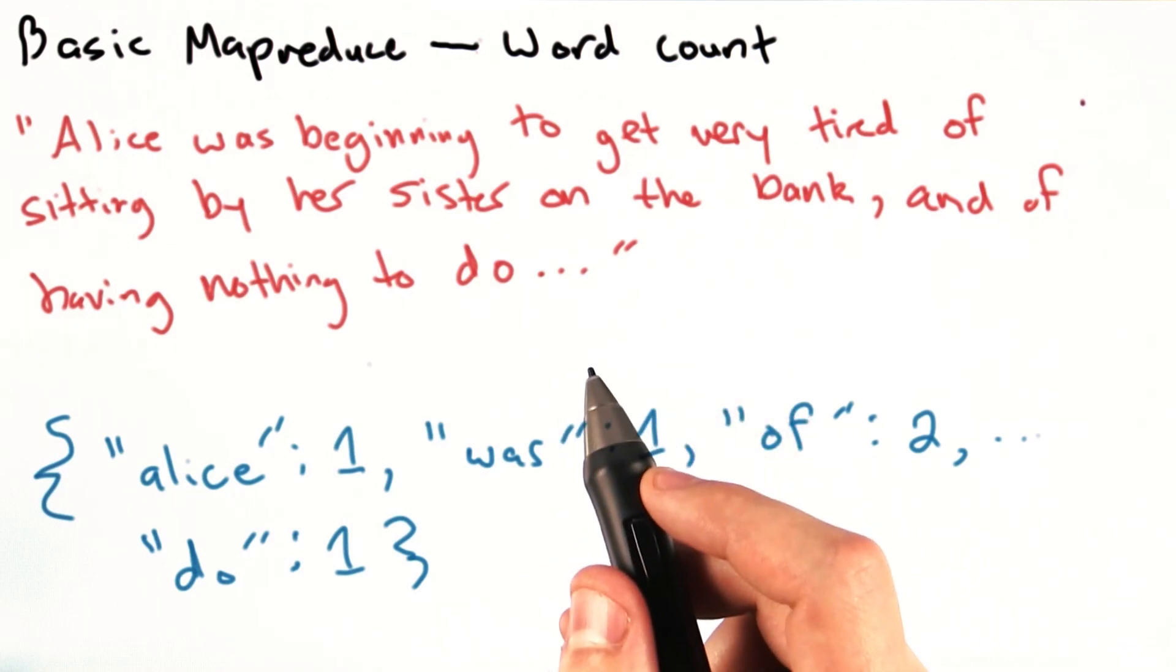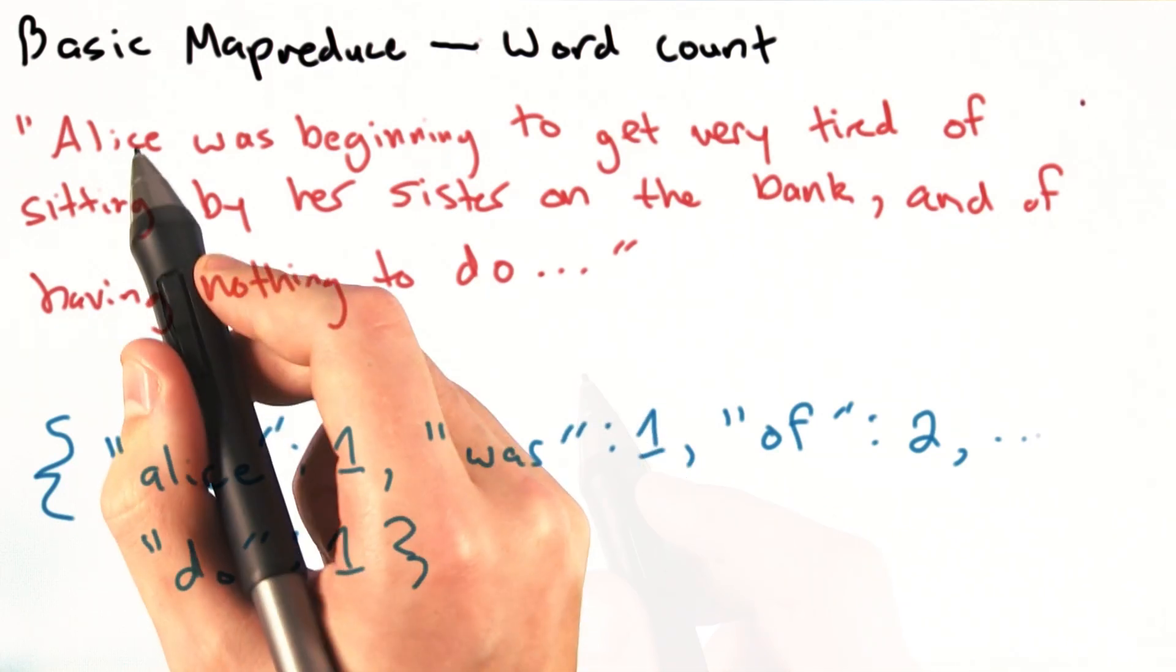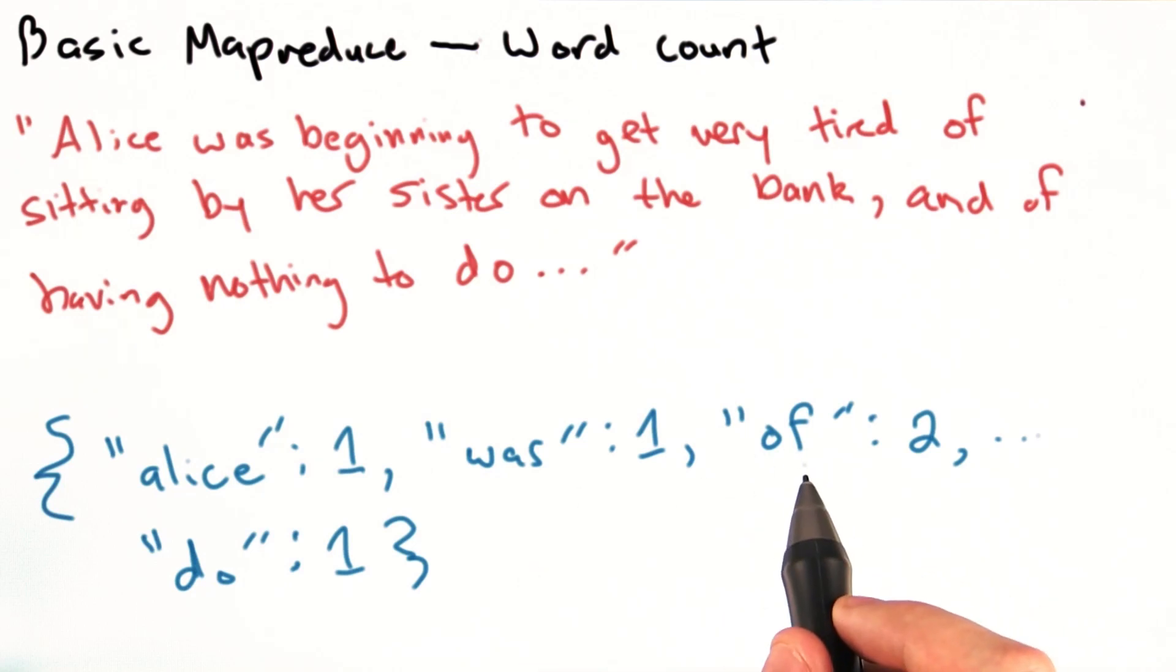why don't you try to write a Python script along the lines of what we just discussed that will get the job done. Given many lines of a text, create a dictionary with a key for each word and a value corresponding to the count of the word in that text. Note that we want the words to be stripped of any capitalization and punctuation. We just want the basic words.